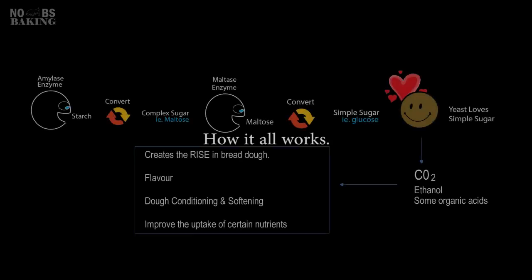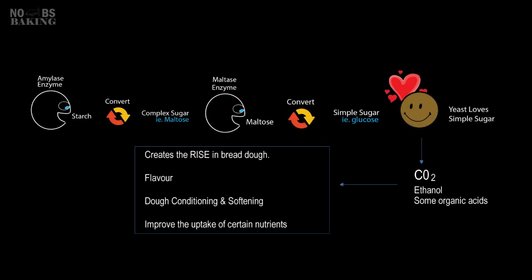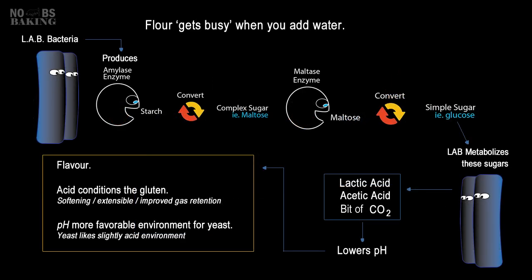When water and flour are added in a dough, amylase enzyme present in almost all living things begins to break down starch. Starch is converted to a complex sugar, maltose. This is where another enzyme, maltase, takes over and converts these complex sugars to simple sugars. By consuming these simple sugars, both yeast and bacteria operate similarly, with the exception of the byproduct.